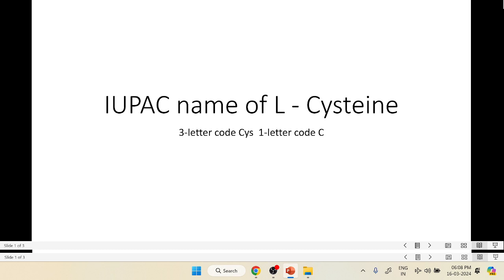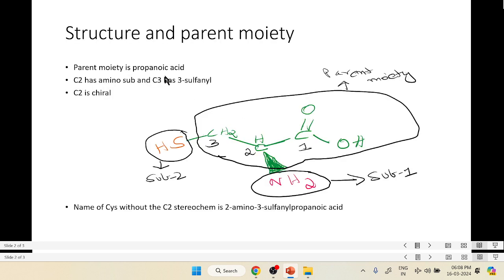Let's first look into the structure of cysteine to identify the main chain and the parent moiety. The parent moiety is propanoic acid, we number beginning with the carboxyl group 1, 2, 3 from right to left. We can see there's a C2 amino group and there's a C3 sulfanyl group. SH is sulfanyl, it can also be called mercapto, but sulfanyl is the more recent one.